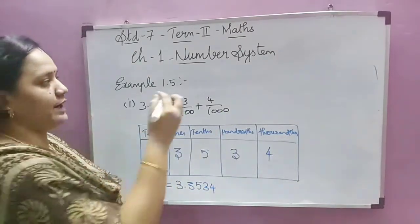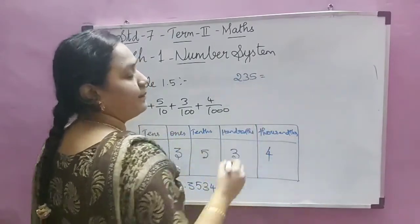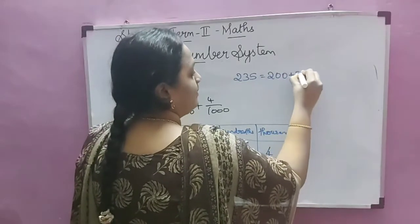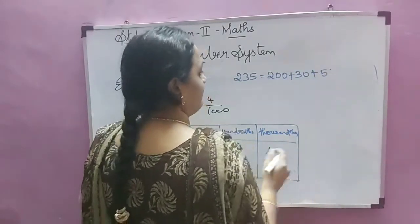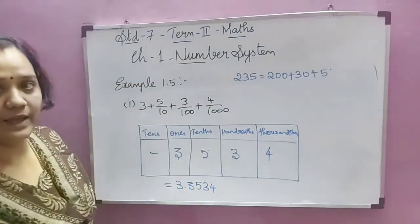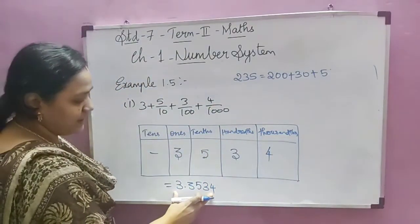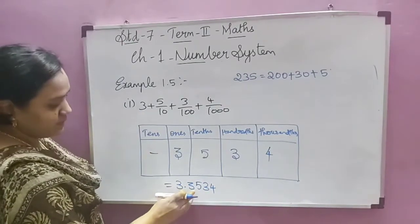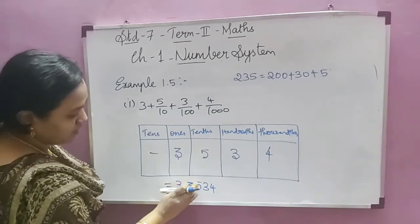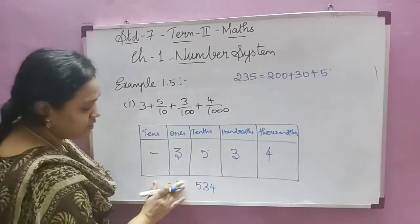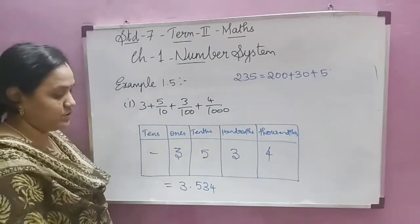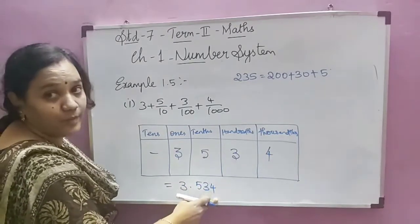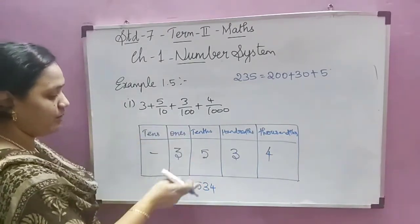You know expanded form — for a whole number like 235 we write 200 plus 30 plus 5. The same way, for the decimal number 3.534, the expanded form is 3 plus 5/10 plus 3/100 plus 4/1000. This is the expanded form of a decimal number.